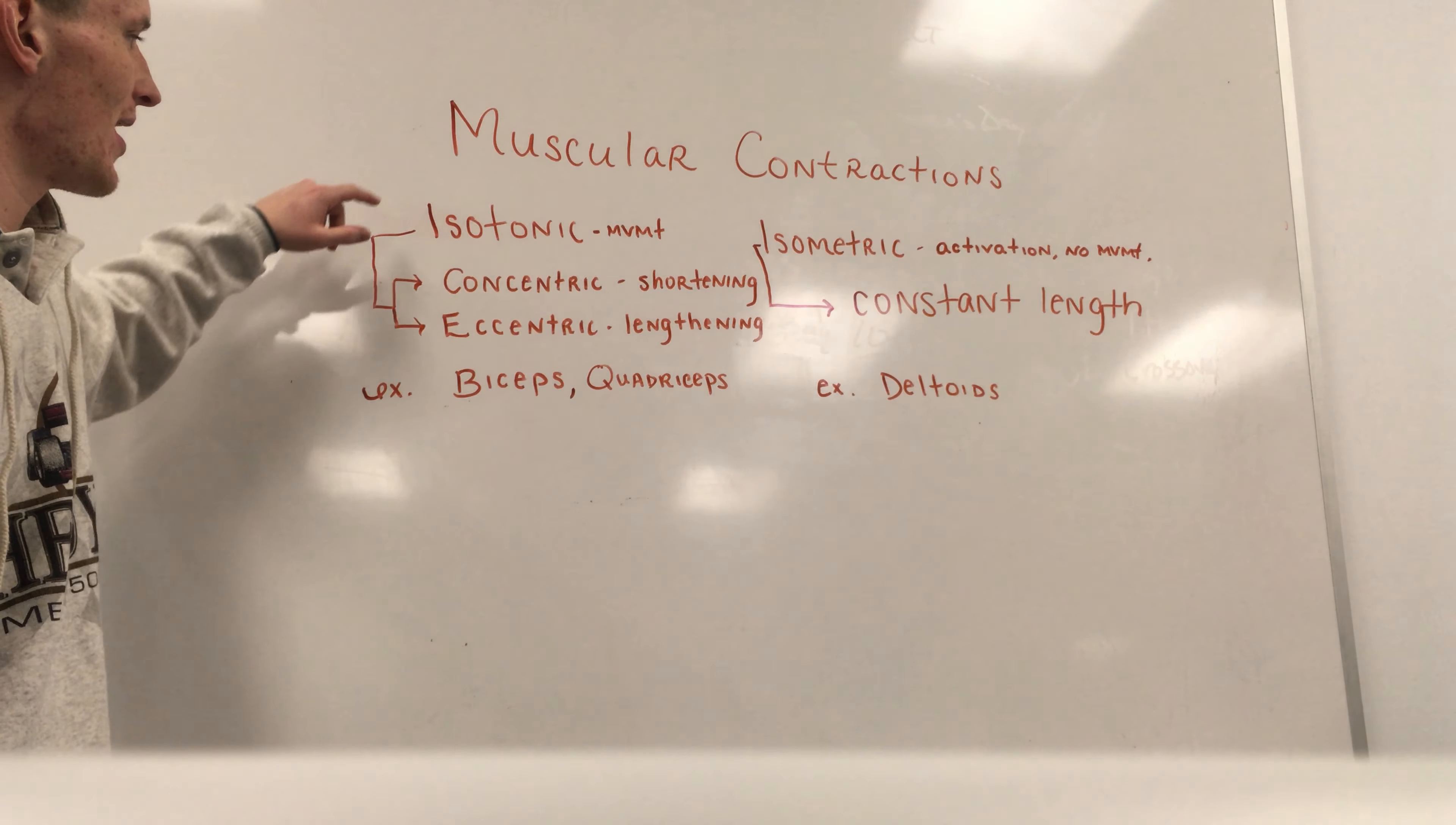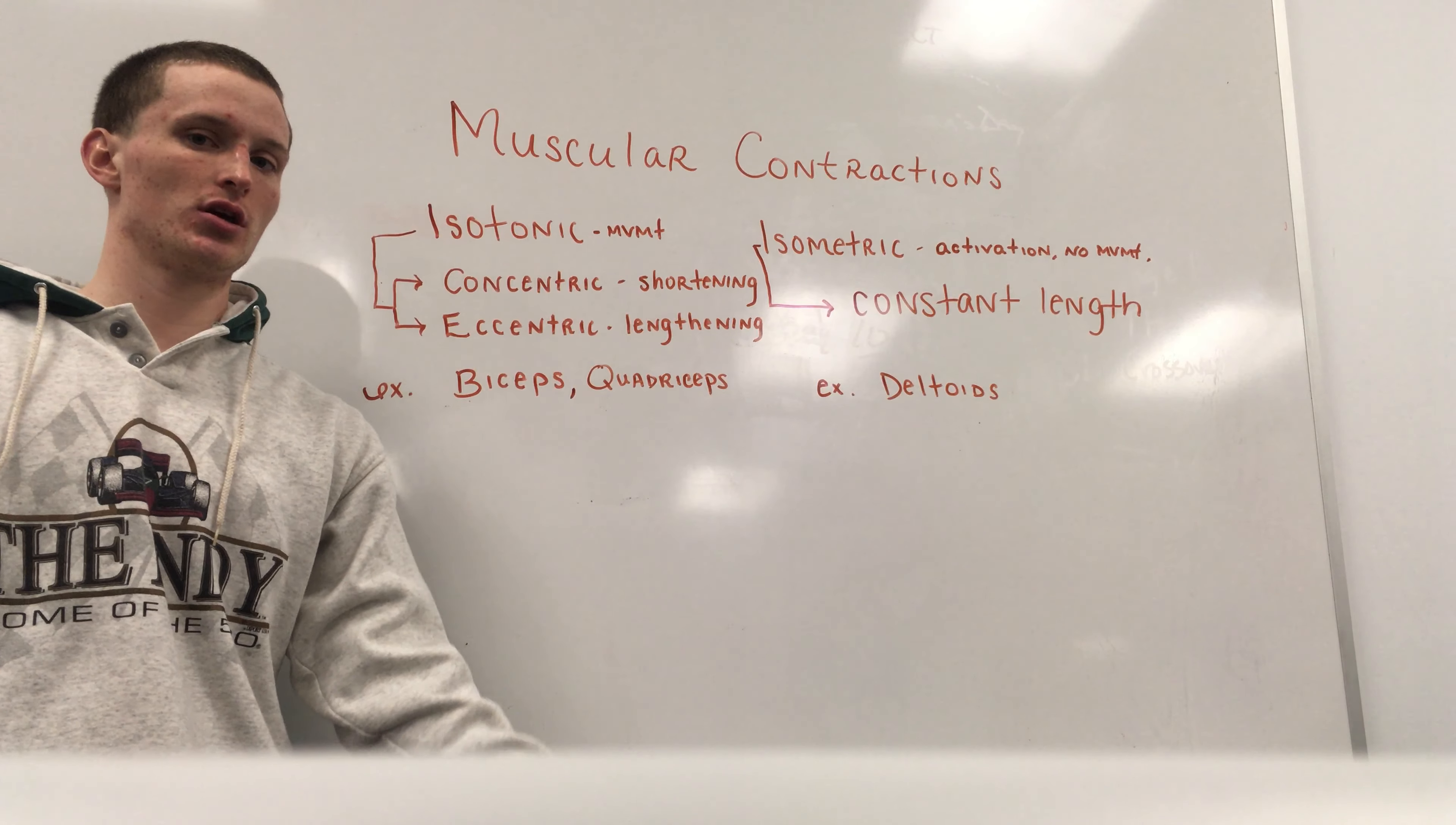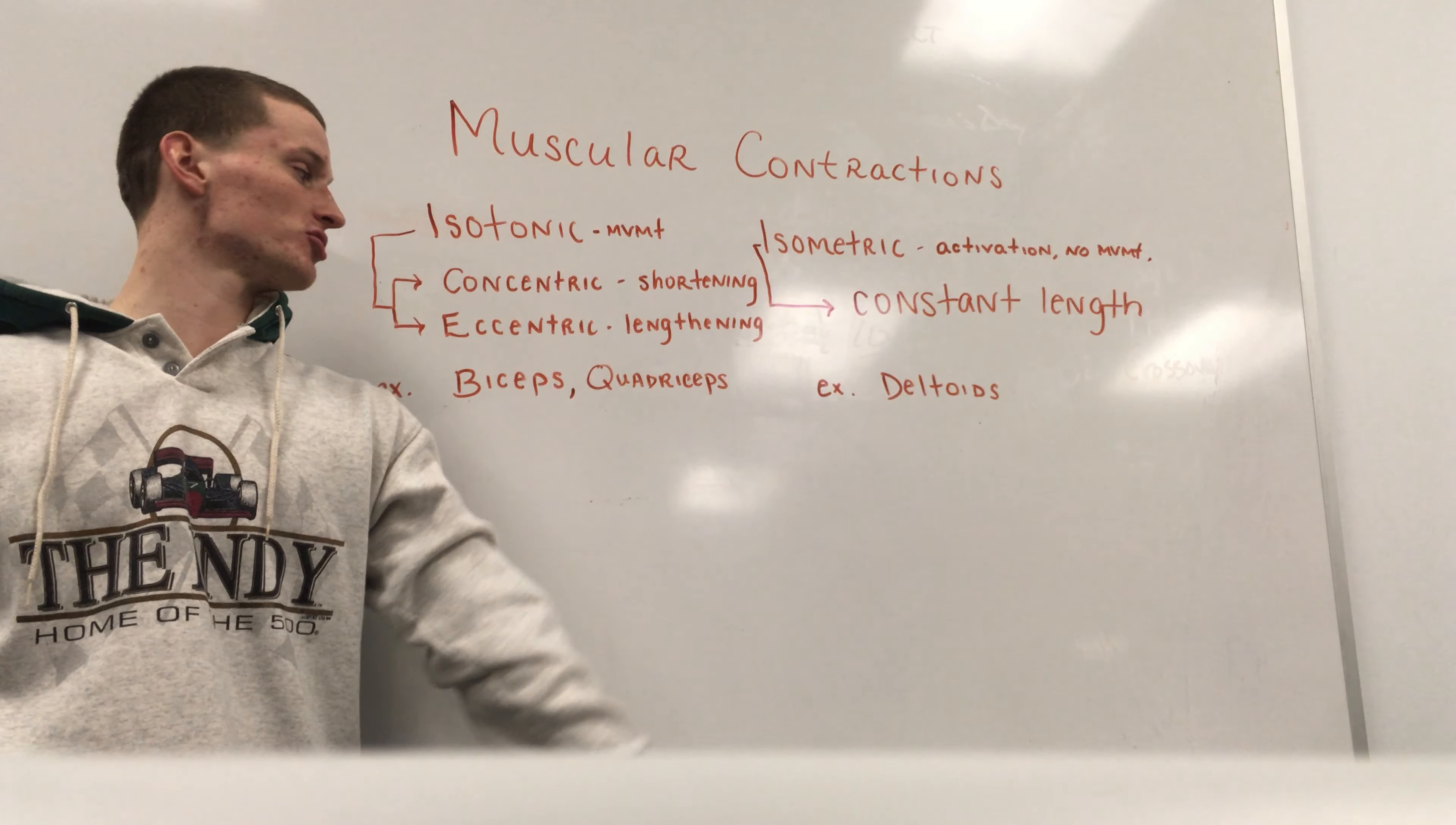So with isotonic, we break it down further into two subgroups of concentric and eccentric. Concentric, you are shortening those muscle fibers, whereas eccentric, you are lengthening those muscle fibers.